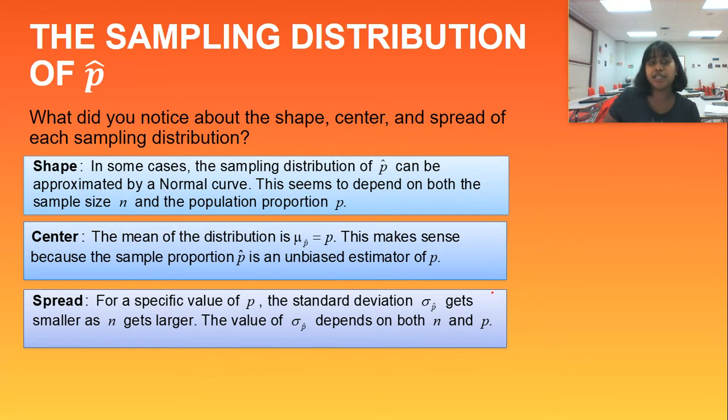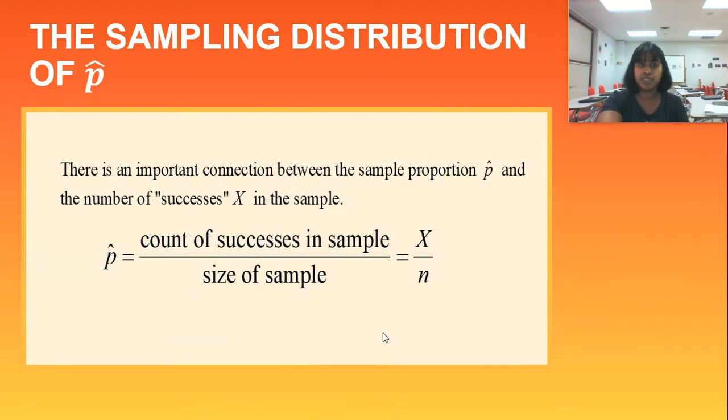So in essence, our standard deviation of p-hat is going to both depend on our sample size as well as the original proportion value. So just kind of notice what happens to center, spread, and shape as you talk about and describe sampling distributions. There is another very important connection.